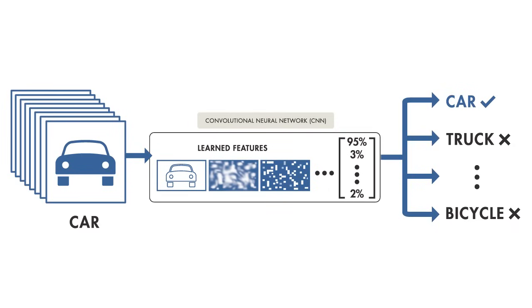On the other hand, with deep learning, you skip the manual step of extracting features from images. Instead, you feed images directly into the deep learning algorithm, which then predicts the object.